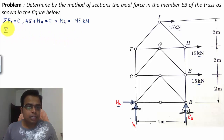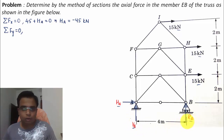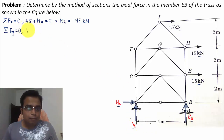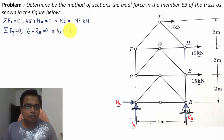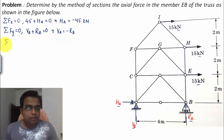For the second equation of equilibrium, summation of all forces in the y-direction equals zero. We have VA and RB, both upward and hence positive. So VA plus RB equals zero, which means VA equals negative RB.